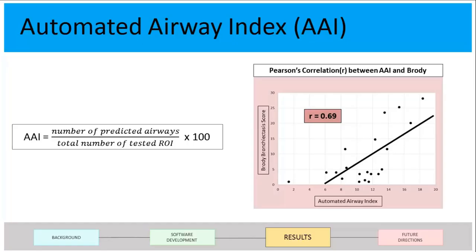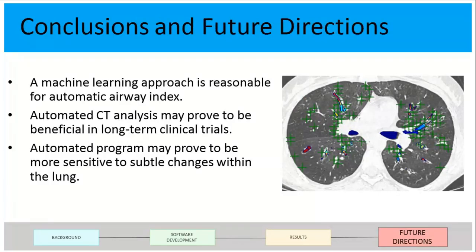I took that for all of the CTs and correlated it with the Brody bronchiectasis score — the automated score compared with the manual scoring technique. There was a correlation of 0.69, which was super encouraging for future directions. A higher AAI means the patient has more bronchiectasis, which means they have more severe cystic fibrosis lung disease.